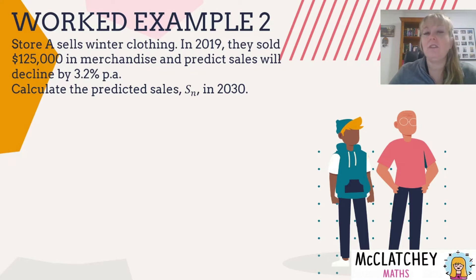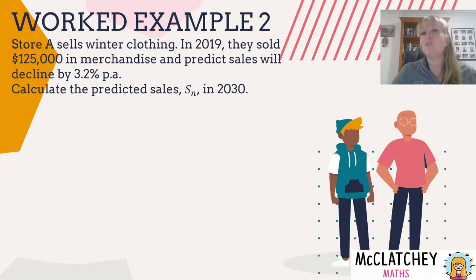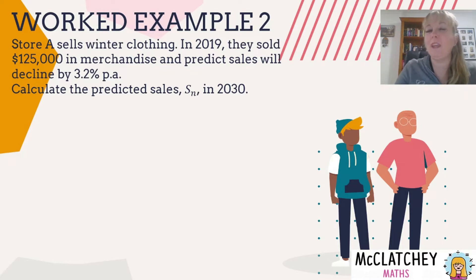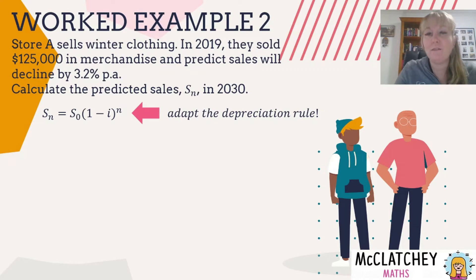In this case, Store A sold a certain amount of clothes in 2019 and we're predicting sales up to 2030. Importantly, we already know the sales for 2019, so our predictions start from 2020. The value of 125,000 is our principal — it represents the end of 2019 — and that will be important when we work out how many years to apply the formula for. I'll use the depreciation rule: a modified compound interest formula subtracting the rate from 1.